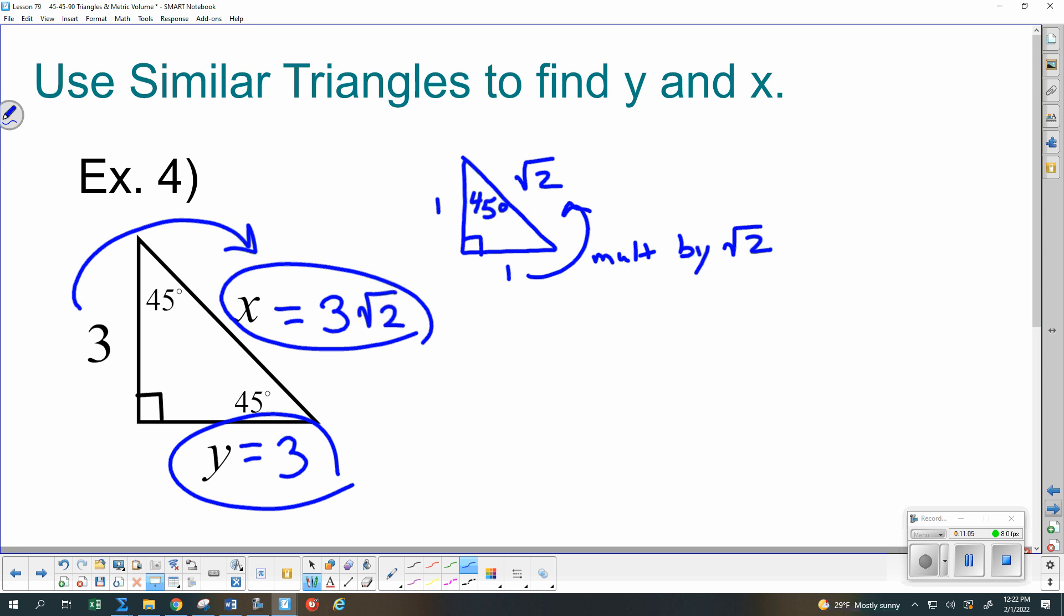Some of you, I know, are more comfortable setting up the proportions instead of doing this multiply by root 2 or divide by root 2 stuff. It is still OK. Draw your reference triangle. And let's do our proportions. 3 over 1 is y over 1 and is x over root 2. So if I did my cross product right here, I'd still have that y is 3. If I did my cross product with these two, I'd still have that x is 3 root 2. So either way is OK. I'm just trying to show you both so that you can decide which works better for you.